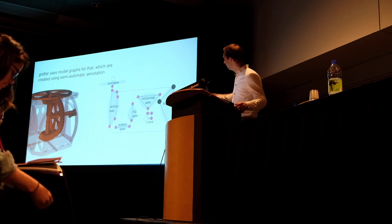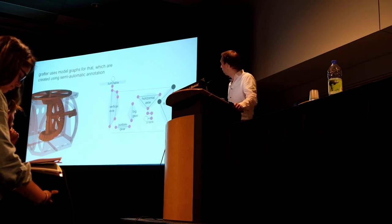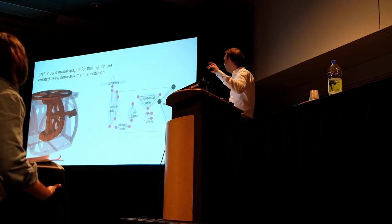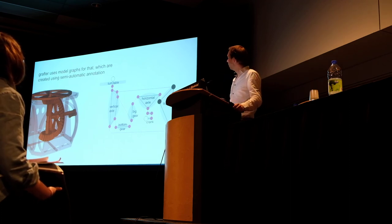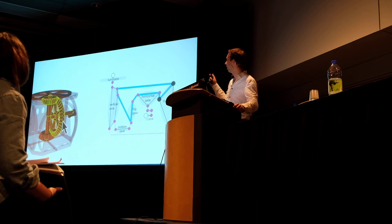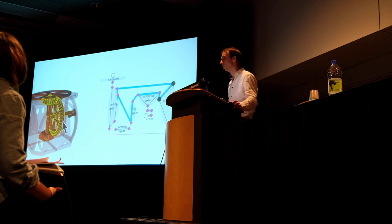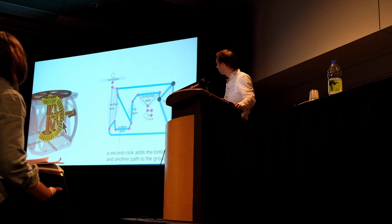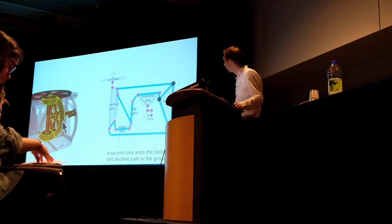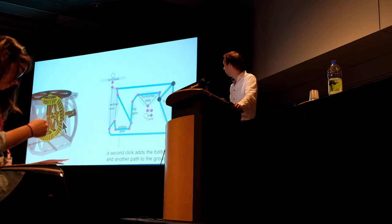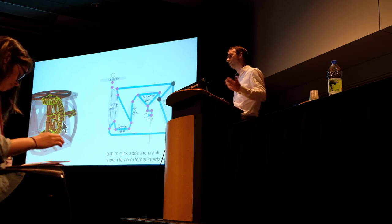Grafter uses a model graph created through semi-automatic annotation to find out how different things work inside. The pink nodes are the parts where different parts touch. The black nodes are the frame that holds the whole thing together. The white nodes are the input and output of the machine. When I click on the big gear, Grafter tries to find paths from that point in the graph to the black nodes — the ground geometry. Clicking again extends the selection by adding one more path to the ground. Continuing to click adds another path; once all ground is selected, it goes to the white input/output nodes. The last click selects the entire machine.